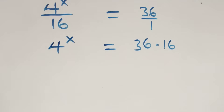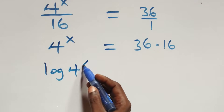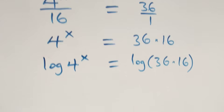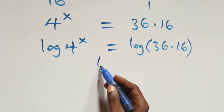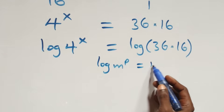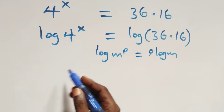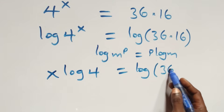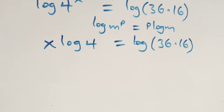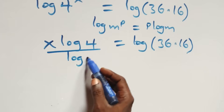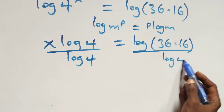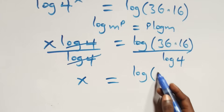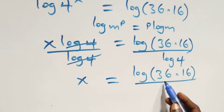The next step here, we take the log on both sides. We have log of 4 raised to power x equals log of 36 times 16. Then we apply the power rule of logarithm, where log m raised to power p is the same as p log m. This becomes x log 4 equals log of 36 times 16. We divide both sides by log 4, and log 4 cancels, leaving x equals log(36 times 16) over log 4.